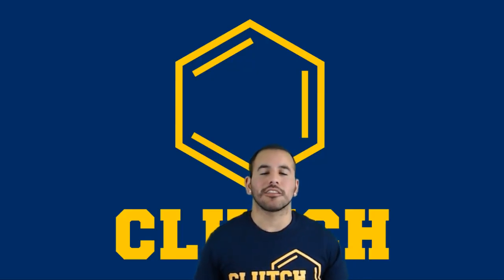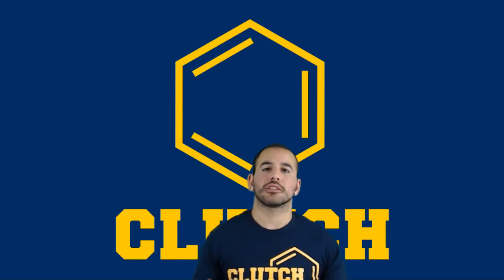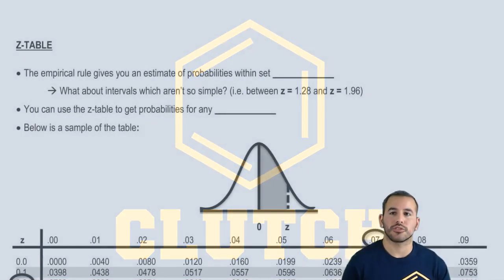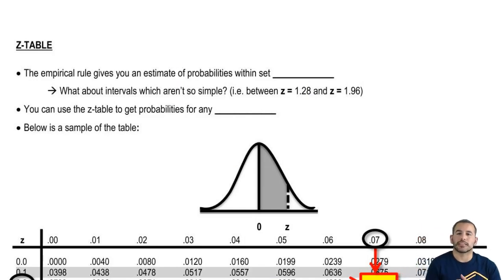Hey guys, so last time we talked about the z-score, how do you determine the z-score, and also what does the z-score tell us about the x value that it's tied to? So now let's go ahead and move on to talking about the z-table. The empirical rule gives you an estimate of probabilities within set intervals.